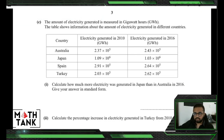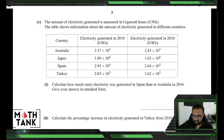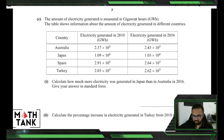The next part is about standard form. We've done standard form in paper one, so we'll go over it again. Standard form is honestly easier with paper two because you can use a calculator to multiply and divide. The question says the amount of electricity generated is measured in gigawatt hours. The table shows electricity generated in different countries — Australia and Japan — in 2010 and 2016. Calculate how much more electricity was generated in Japan than in Australia in 2016, giving your answer in standard form.